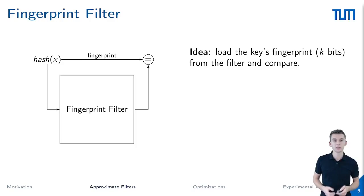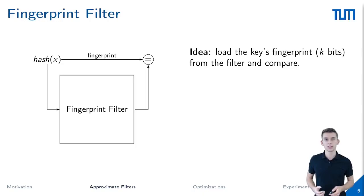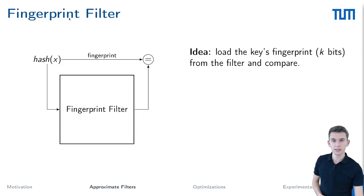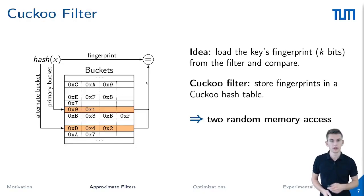Recently, a new kind of approximate filter was introduced: the fingerprint filter, which stores small signatures of the keys in a hash table-like structure. When probing for a key, we first compute its hash value and then retrieve the stored signature from the filter. We then compare the retrieved value to the actual fingerprint, which is computed using the same hash function. The entire process can be seen in the figure on the left side.